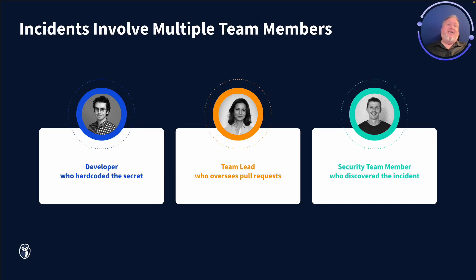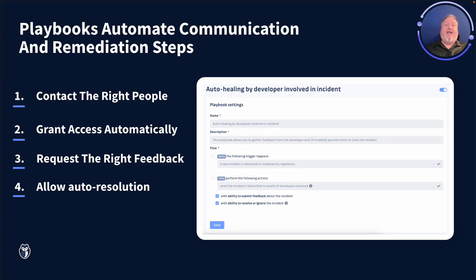GitGuardian playbooks are intended to help the needed remediation communication cycle, shortening it quite a bit by automating the emails that go to the right team members. Playbooks are also a way to grant any needed access to the GitGuardian internal monitoring platform quickly and easily without exposing the entire dashboard to team members that don't need full access. Playbooks also help you request the right feedback in the most efficient way possible, and we can even enable auto-resolution of commonly seen incident patterns. Playbooks are available for anyone on a business plan and can be enabled through just a couple of clicks in the dashboard.